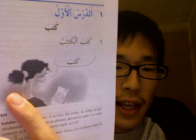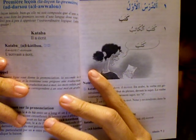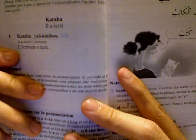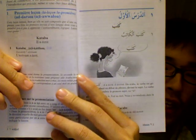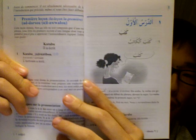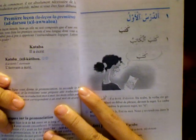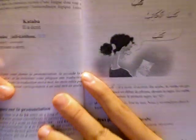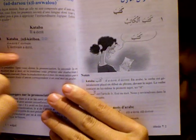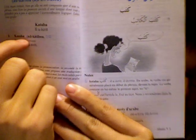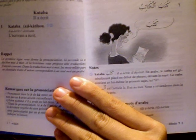This is the first lesson. They start with just one phrase — they don't want to overwhelm you with a lot of vocabulary at first, so you don't get discouraged when learning such a different language like Arabic. The phrase is 'kataba,' which means 'he wrote.' Here is the text.